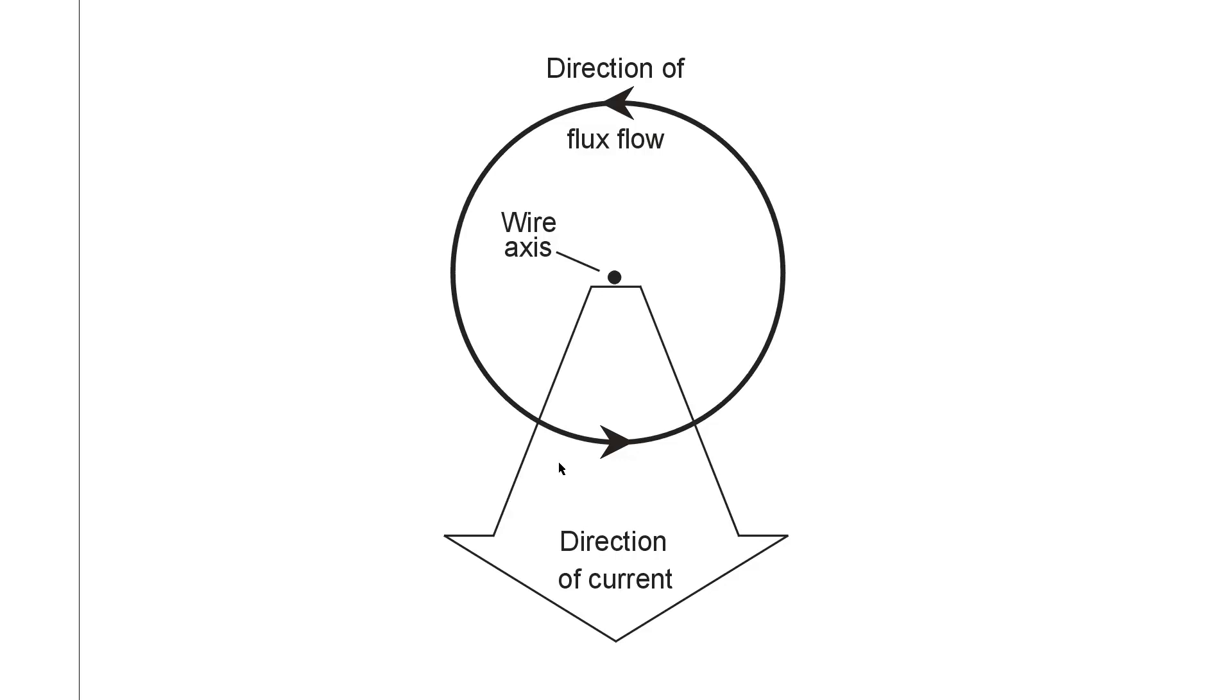As things turn out, if you point your thumb of your right hand towards you, curl your fingers, then the direction of the magnetic flux flow will point in the direction of your fingers while the current points in the direction of your thumb. So they call that sometimes the right hand rule for electric current.